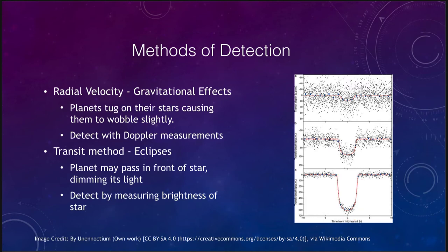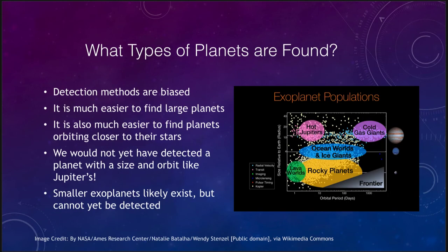Now, what do we find when we look at these? What types of planets are we finding? Well, we find, first of all, we want to say that the detection methods are biased. That doesn't mean that they're wrong. It just means that right now it's much easier to find a large planet, and it's much easier to find planets that are orbiting closer to their stars. And why is that?